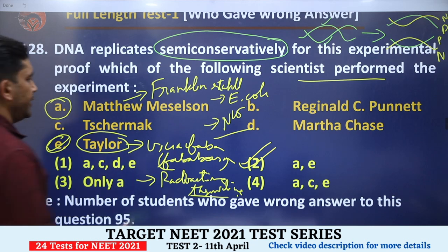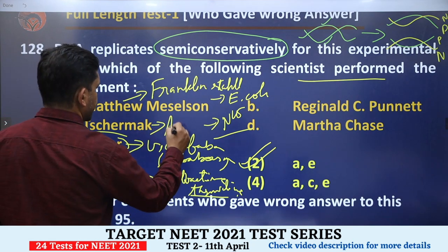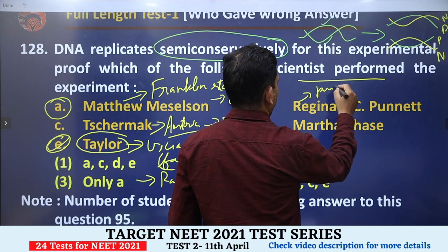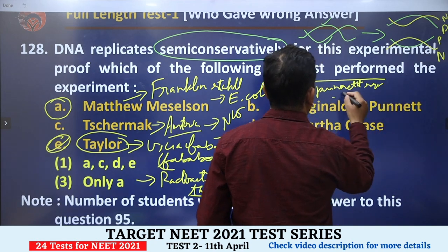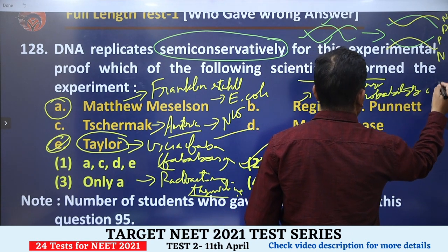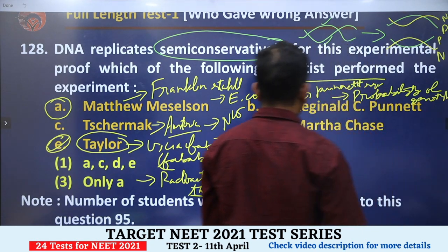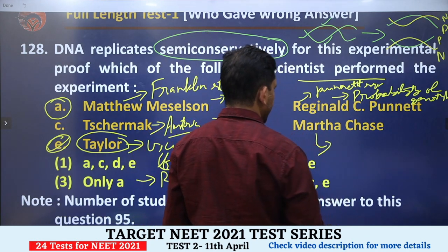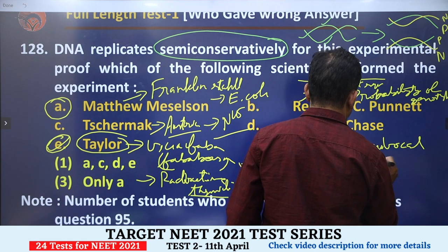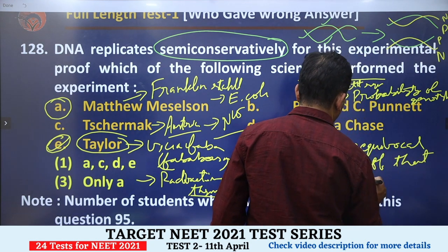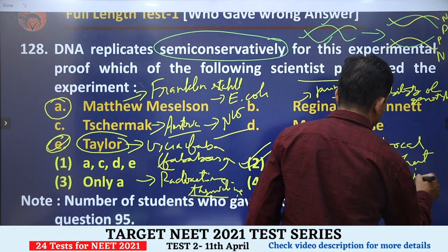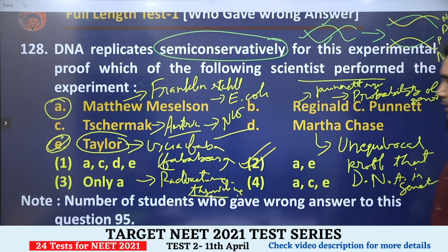Other options: Hugo de Vries, Correns, and Tschermak performed the rediscovery of Mendel's work — and de Vries was from Austria. Reginald C. Punnett devised the Punnett square, whose purpose was to calculate the probability of genotypes — to determine what types of genotypes will be produced and with what probability. Alfred Hershey and Martha Chase gave the unequivocal (undisputed) proof that DNA is genetic material. After their experiment, no further dispute remained on that question.